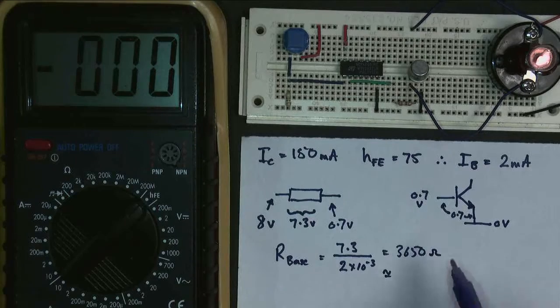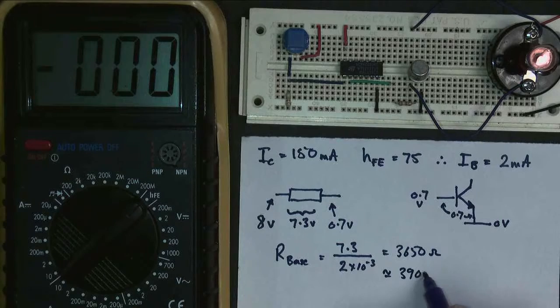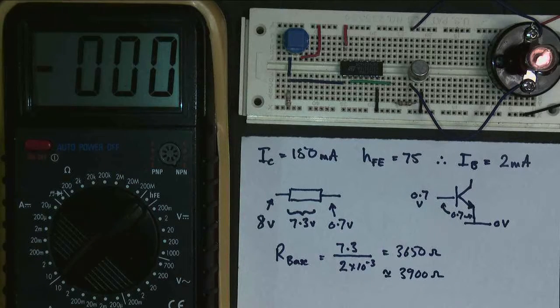And I should have gone slightly lower, but the only one I had available was this one here, which is 3,900 ohms. So there we go. That's how you calculate the base resistance.